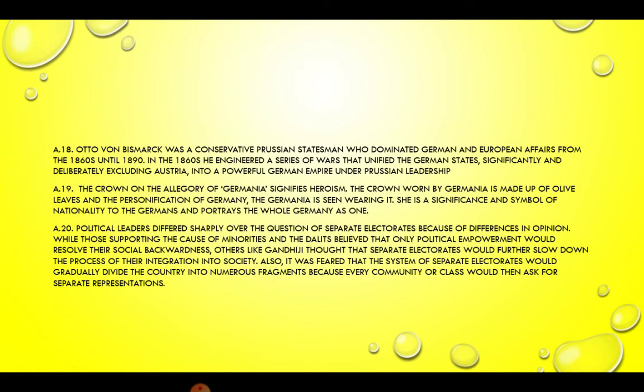Answer 18. Otto von Bismarck was a conservative Prussian statesman who dominated German and European affairs from the 1860s until 1890. In the 1860s, he engineered a series of wars that unified the German states significantly and deliberately excluding Austria into a powerful German empire under Prussian leadership.